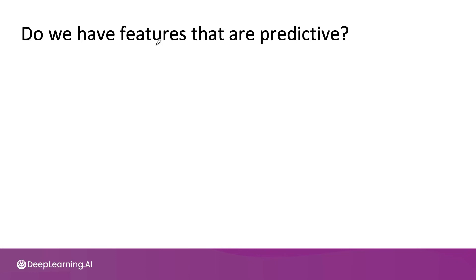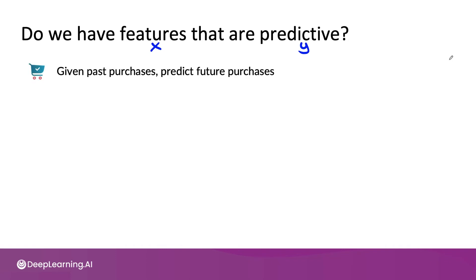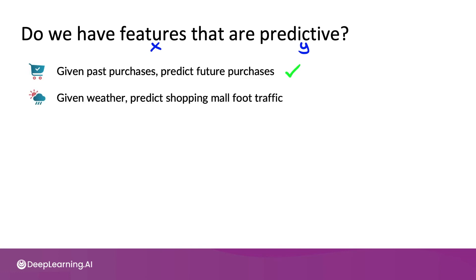For structured data problems, one of the key criteria to assess for technical feasibility is: do we have input features x that seem to be predictive of whatever we're trying to predict, y? In an ecommerce example, if you have features showing past purchases of a user and you'd like to predict future purchases, that seems plausible because past purchases are predictive of future purchases. Similarly, given data on weather, if you want to predict shopping mall foot traffic, we know that when it rains, fewer people leave their house — so weather is predictive of foot traffic.